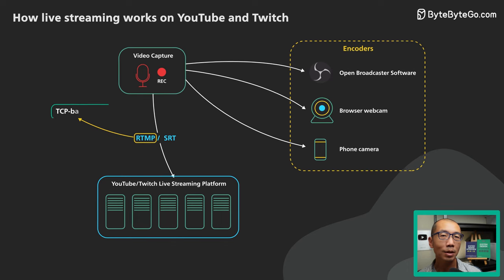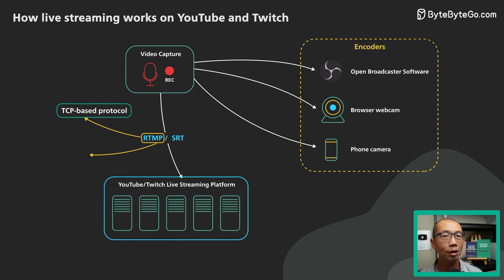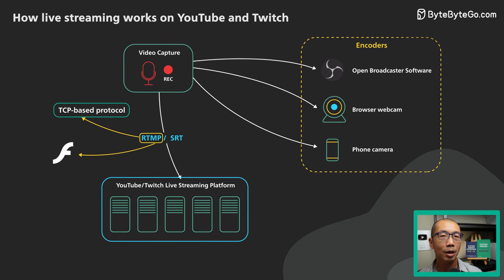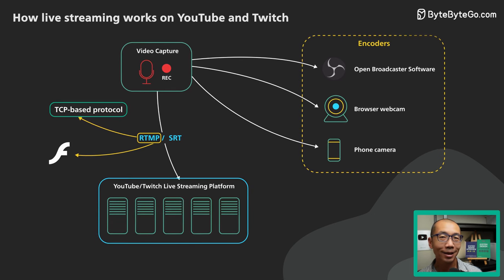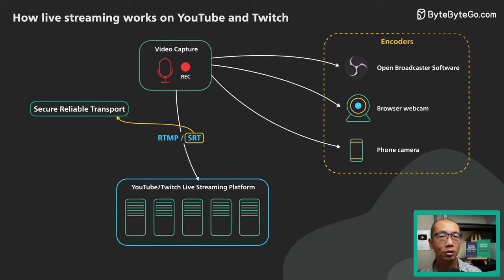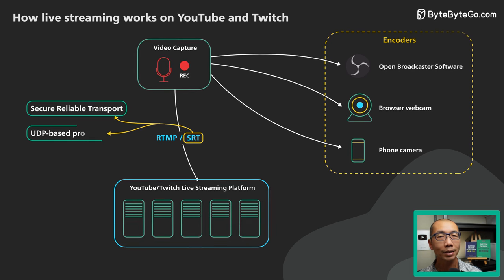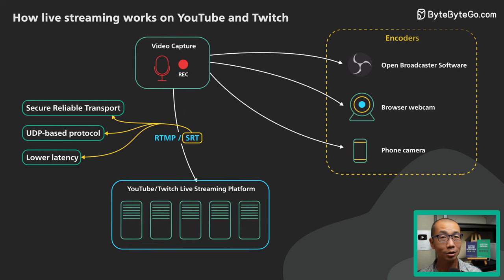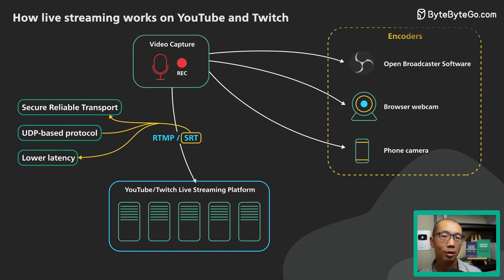The most popular transport protocol is RTMP, or Real-Time Messaging Protocol. RTMP is a TCP-based protocol that started as a video streaming protocol for Adobe Flash. Encoders can speak RTMP or a secure variant called RTMP-S. There is a newer protocol called SRT, or Secure Reliable Transport, that could start to replace RTMP. SRT is UDP-based and promises lower latency and better resilience to poor network conditions. However, most streaming platforms do not yet support SRT.